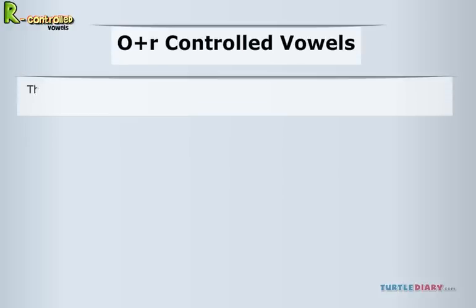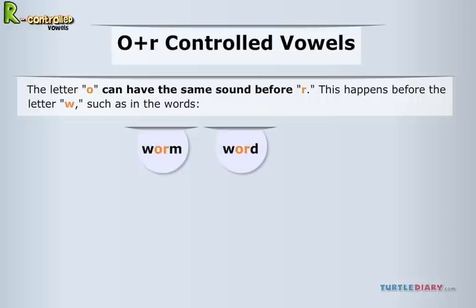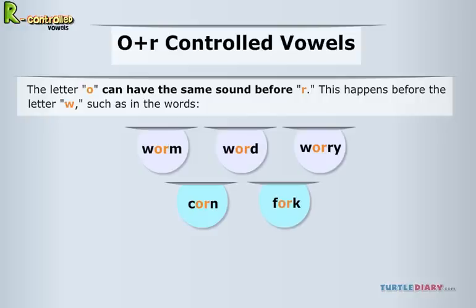The letter O can have the same sound before R. This happens before the letter W, such as in the words worm, word, or worry. Otherwise, the O-R sound is different. You can hear it in the word corn or the word fork. Try reading these words to hear the sound some more.